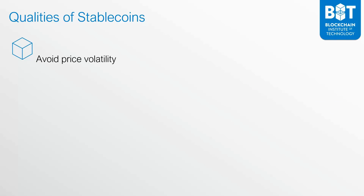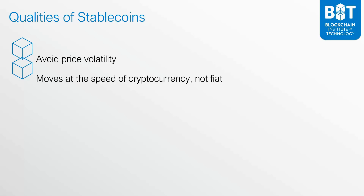The first quality is that stable coins are designed to avoid price volatility. For example, if you have a stable coin that's pegged to the US dollar, that stable coin should have the value of the US dollar. If you buy $500 worth of a stable coin, you should be getting the equivalent of $500. Regardless of whether the cryptocurrency market goes up or down, the goal of that stable coin is to retain the value of the asset it's pegged to. Stable coins enable you to move at the speed of cryptocurrency, not fiat, and this is one of the primary reasons why stable coins exist.